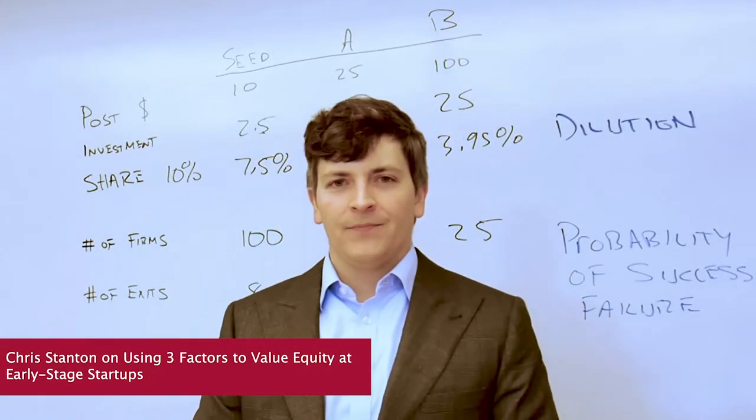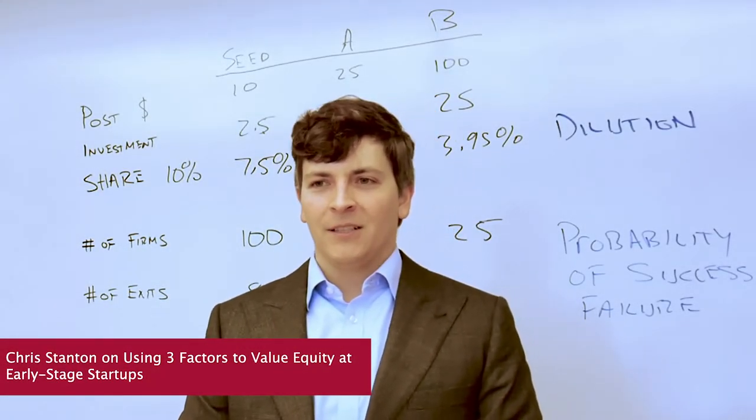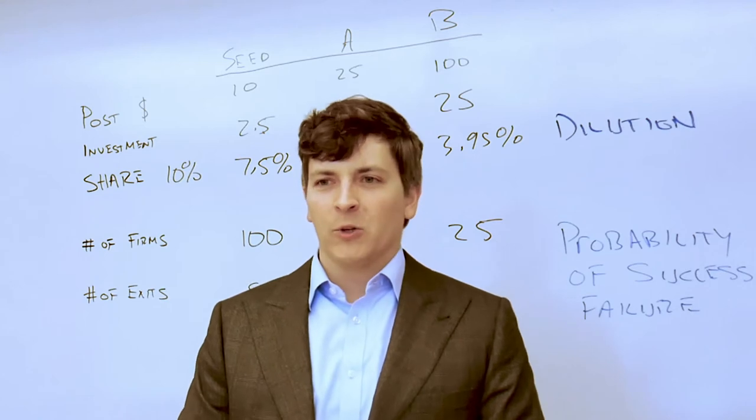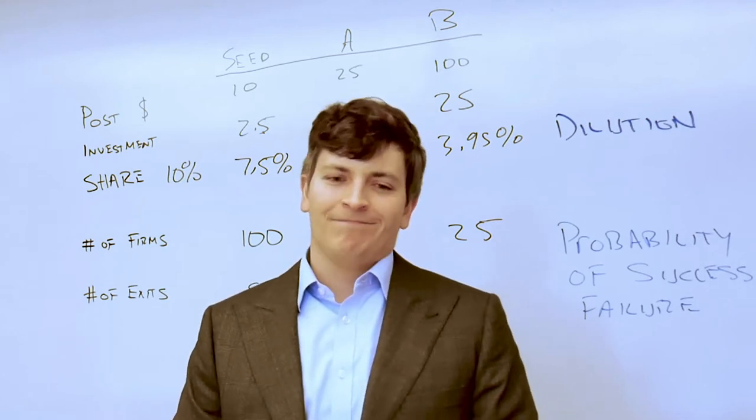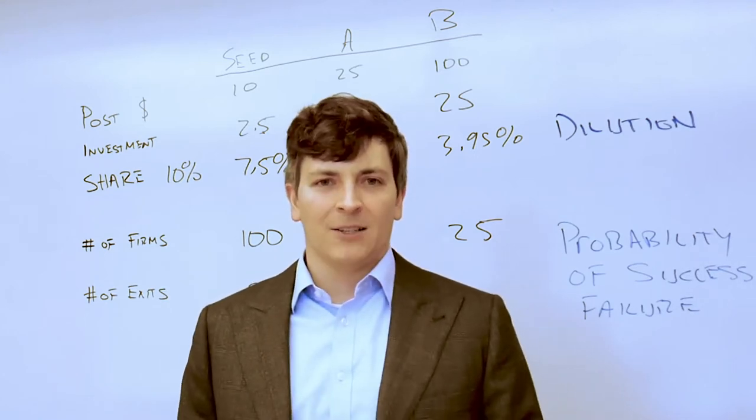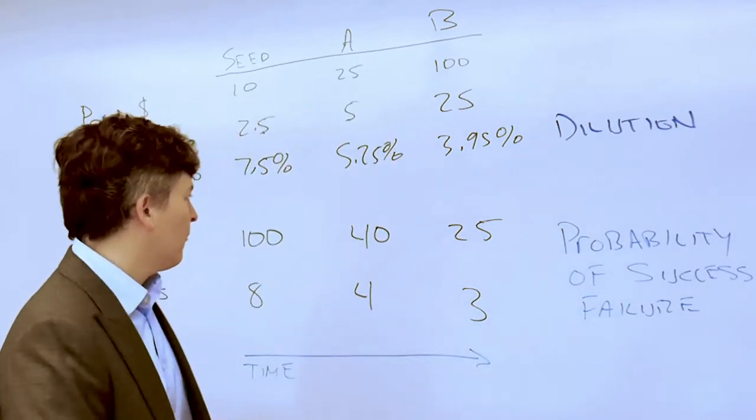So, we've started with a dream that the founder promised you 10% of a $100 million company, or $10 million. How does that look after we account for all of these factors?